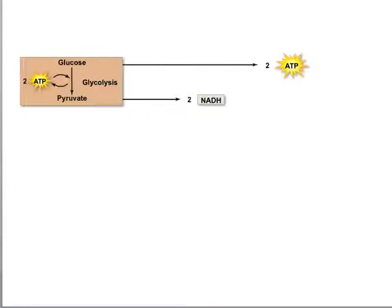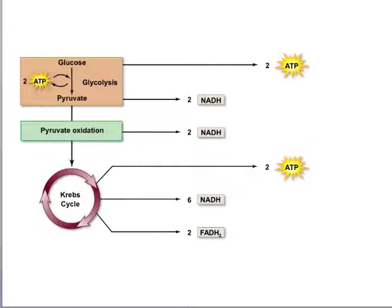The first step of cellular respiration is glycolysis, and this step can occur in the absence of oxygen. If oxygen is present, the product of glycolysis — which is the three-carbon molecule called pyruvate — can then undergo pyruvate oxidation, and this results in the reduction of an NADH molecule for each pyruvate molecule. Keep in mind that there are two pyruvate molecules per molecule of glucose.